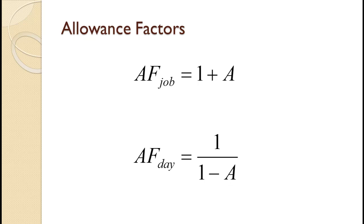The allowance factor is computed differently depending on if the allowance is based on job time shown in the first equation or workday time shown in the second equation. Another way to look at this is we use the job equation when each job has its own allowance factor and the day equation when all similar jobs have the same allowance factor. In practice the two values tend to be very close.